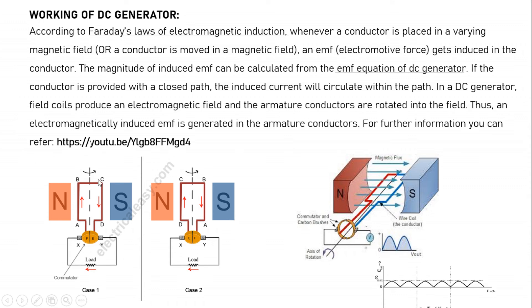In a DC generator, field coils produce an electromagnetic field and the armature conductors are rotated into the field. These are the armature conductors and field coils are placed in the poles. Thus an electromagnetically induced EMF is generated in the armature conductors. Once again, these are the armature conductors placed between the poles and when rotated within the poles, which are continuously producing flux.